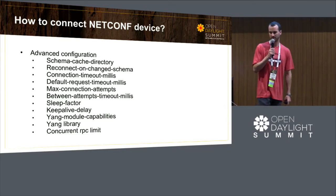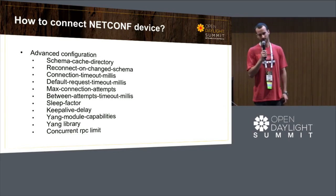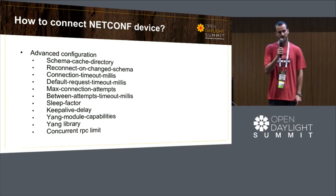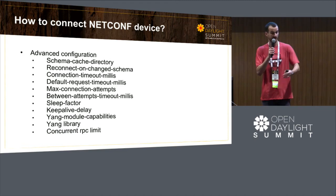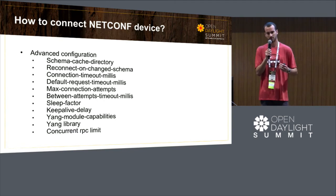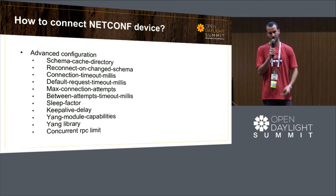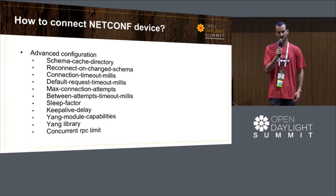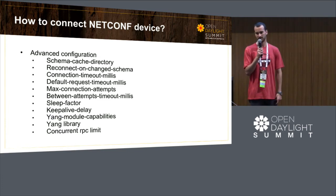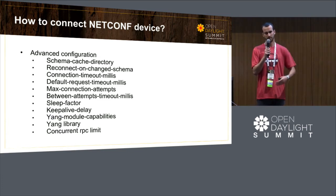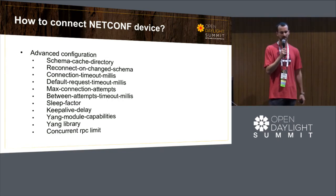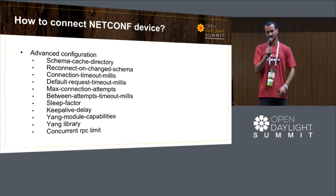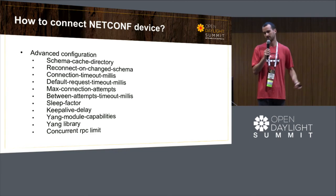The two others are new things added in Boron. The YANG library lets you specify a URL or URI where you have a YANG library residing, and the netconf connector would download all the YANG models that reside behind that URL, so they'll be part of the schema context of the device. Finally, the last one is the capability to send concurrent RPCs to your netconf device — prior to that, you were able to send only one request at a time, and now you can send multiple at the same time.